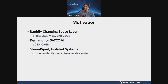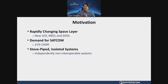The demand for SATCOM has had about a 21% compound annual growth rate over the last three or four years — a really significant amount of demand. Because of that demand, a 2020 Space Force report discussed the different issues with migrating those systems. However, there's a huge problem with dealing with stovepipe and isolated systems. In the next 10 years, we're expecting to have about 50,000 active satellites in orbit, which is an order of magnitude more than what's up there today.